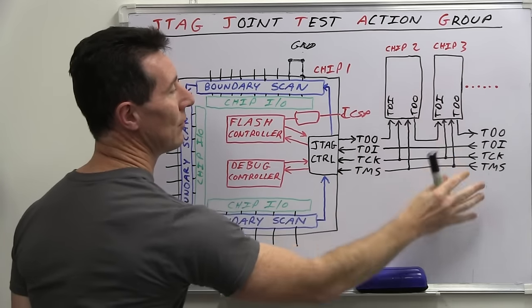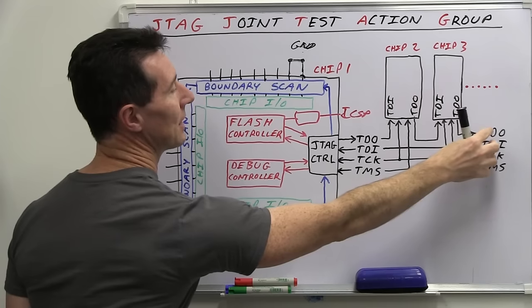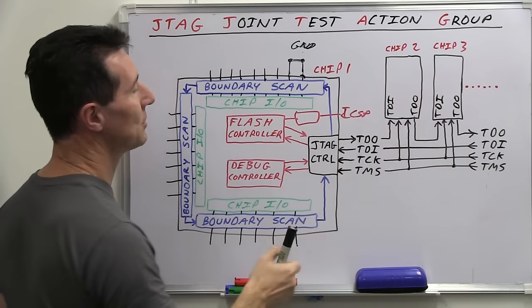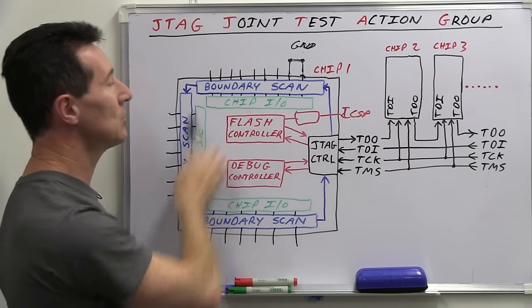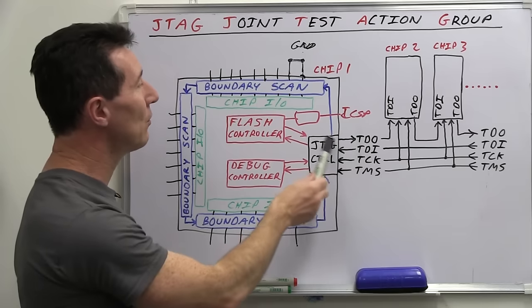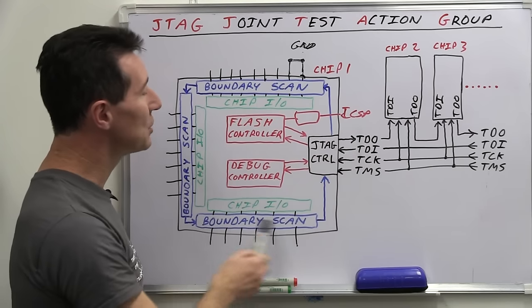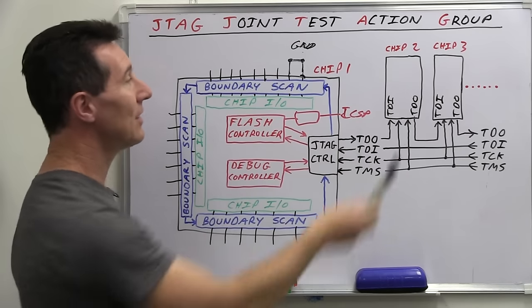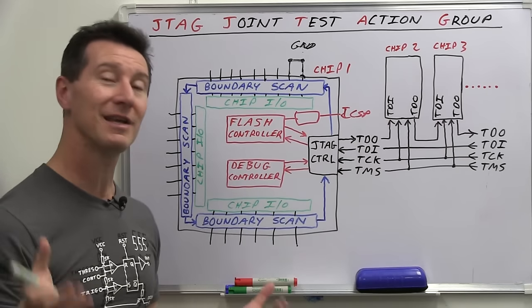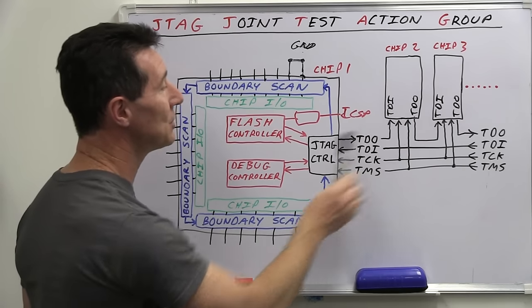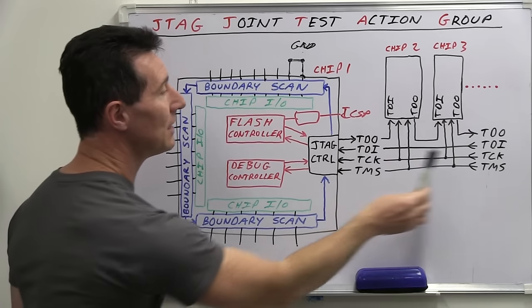But the beautiful thing about the serial daisy chaining nature of the JTAG system is that you can have additional chips on your board, essentially an unlimited number, and then daisy chain those together. So instead of plugging directly into this chip, here's our programmer plugged onto our header on our board over here. We've got our data coming in, it goes through this chip, all the stuff it needs to, and then it shifts the data out, and then the data goes into the TDI pin of chip number two here.